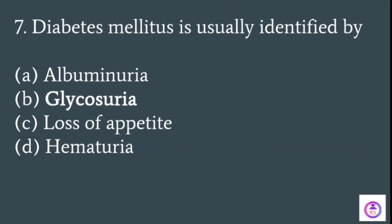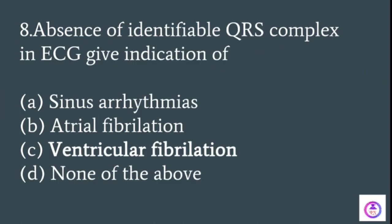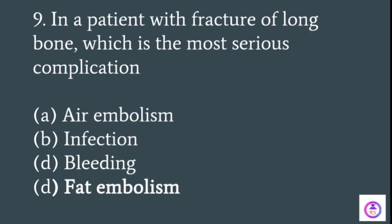Diabetes mellitus is usually identified by glycosuria. Absence of an identifiable QRS complex on ECG gives indication of ventricular fibrillation. In a patient with fracture of long bones, the most serious complication is fat embolism.